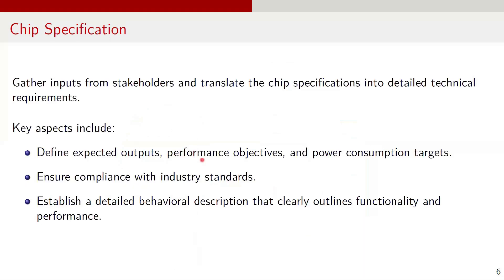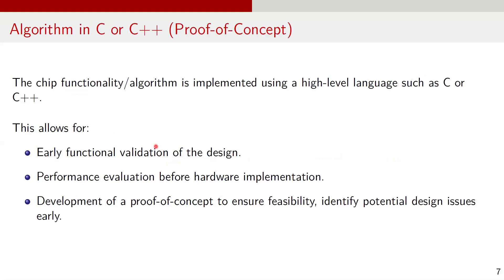Let's go over these steps in detail. The first steps involve gathering input from stakeholders and translating chip specifications into detailed technical requirements. Key aspects of the chip include defining expected outputs, performance objectives, and power consumption targets. It is important to ensure compliance with industry standards. In this stage, we also establish a behavioral description that outlines functionality and performance of the chip. A well-defined specification serves as a foundation for the entire design process, ensuring clarity and alignment with project goals. In the next step, the chip functionality and algorithm is implemented using a high-level language, such as C or C++. This allows for early functional validation of the design, performance evaluation before the hardware implementation, and development of a proof of concept to ensure feasibility of the final product. This step helps identify potential design issues early, reducing the risk in the later stages of the ESIC development process.